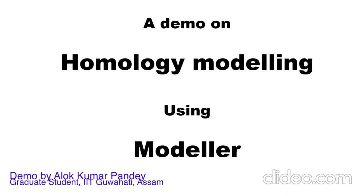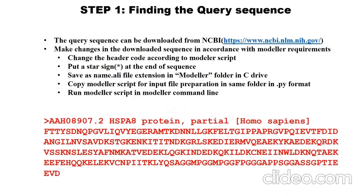In this video, I will talk about the steps involved in homology modeling using MODELLER software, performing it on screen and explaining each step in detail. In step one, we need to find our query sequence — either from the literature or downloaded from the NCBI website. The downloaded file needs some changes to make it compatible for working with MODELLER.